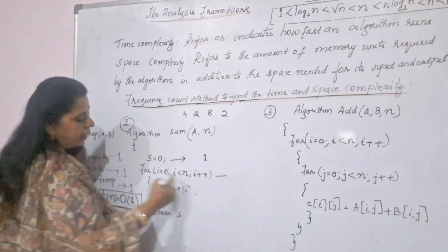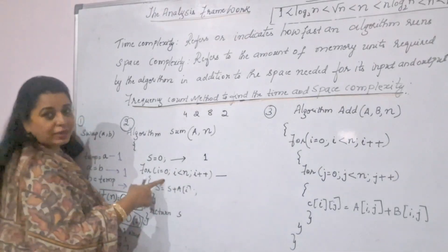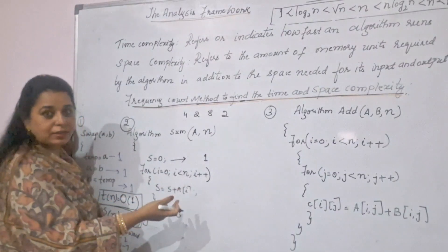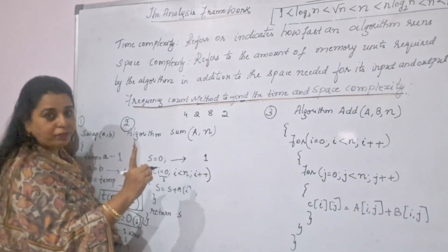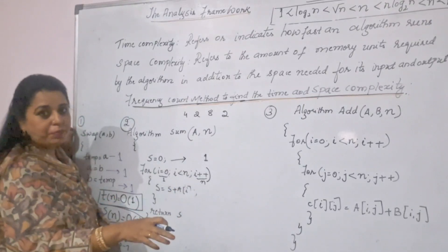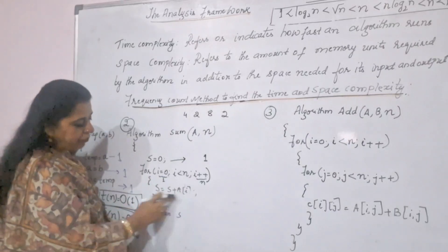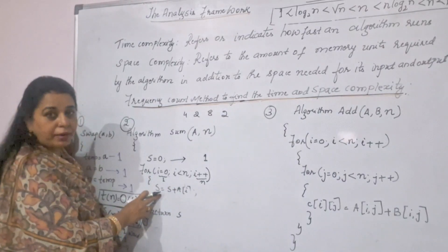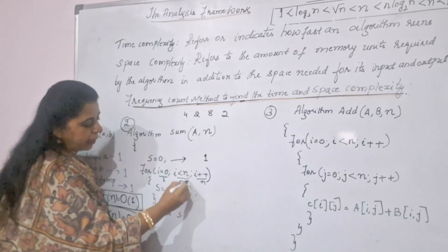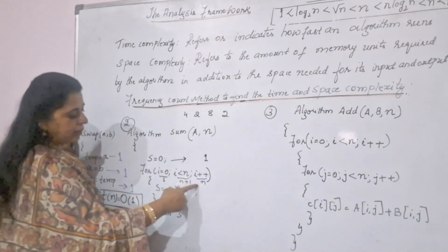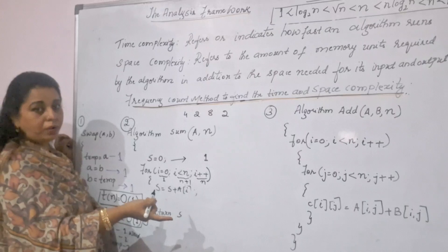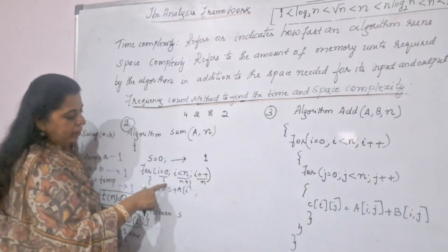For this second example, the first statement is an assignment taking one unit of time. Then comes a for loop, which itself has three statements. The initialization statement executes only one time. The increment statement executes n times. The comparison statement executes n plus one times — for n times the condition is true, and on the n-plus-one-th comparison the condition becomes false. So we take the maximum, which is n plus one.